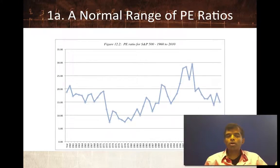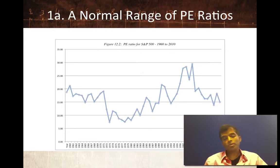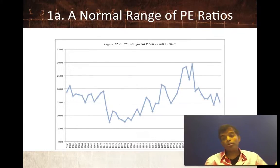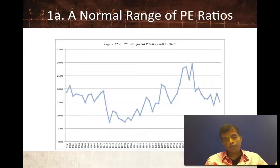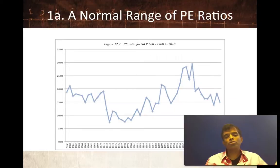You can already see one of the problems with having a normal range: it depends on what time period of history you look at. With a P/E ratio of 16 — the P/E ratio in June of 2013 — I could argue that 16 is high relative to the 1970s, or tell you stocks are cheap because 16 is still lower than the late 90s. I can pick and choose slices of history to tell any story I want. If you look at P/E ratios across 52 years, the median P/E for U.S. stocks is about 15-16, suggesting stocks don't look either overvalued or undervalued today. But normal is very much in the eye of the beholder.